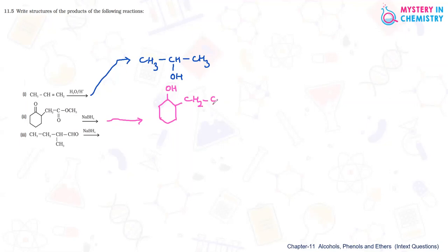This is not a simple carbonyl group — this is actually an ester. Since it is an ester, it is not affected by NaBH4 reduction. So only the carbonyl part is reduced and this should be the final product.